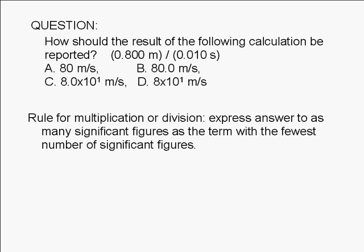When multiplying or dividing numbers with significant figures, the rule is to express the answer to as many significant figures as the term with the fewest significant figures.